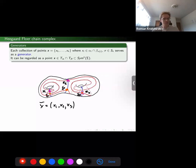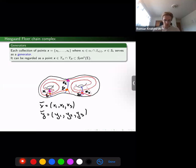Likewise, if we pick these orange points y1, y2, and y3, with x3 equal to y3, they also form a generator for this chain complex. One can think of such a collection as a point in a symmetric product which belongs to an intersection of real tori associated with alpha and beta curves.